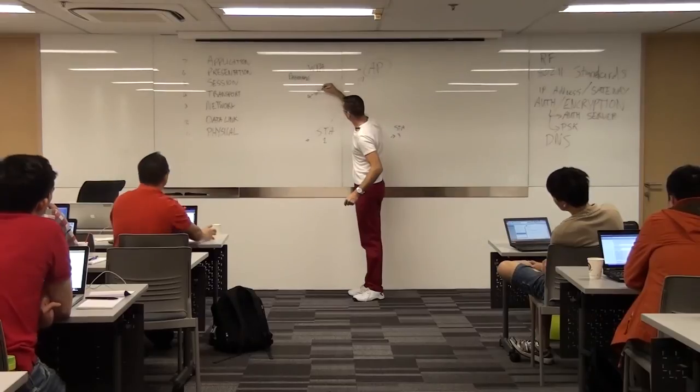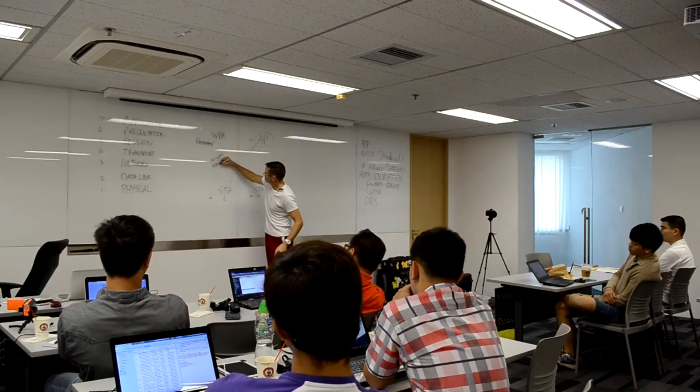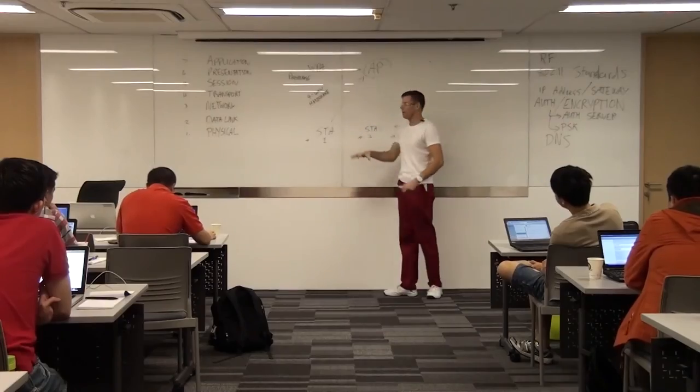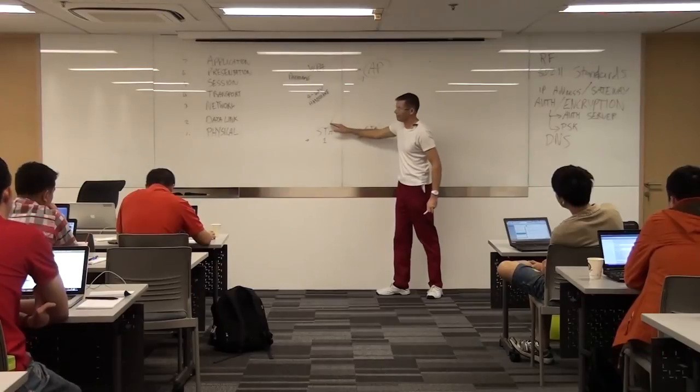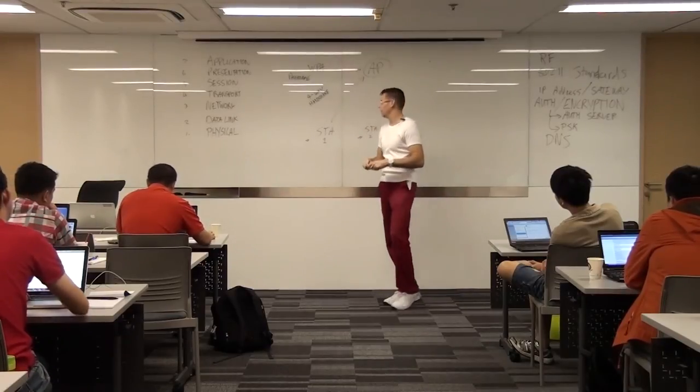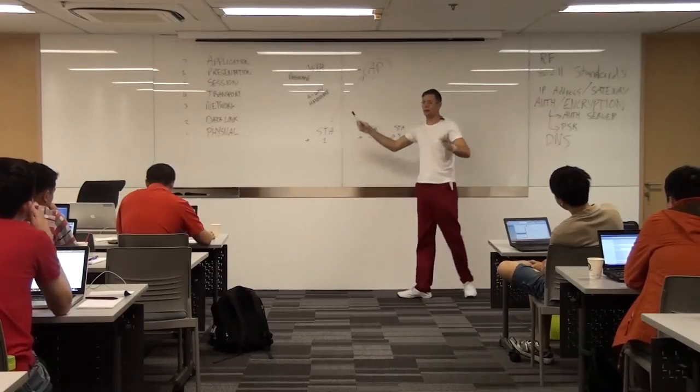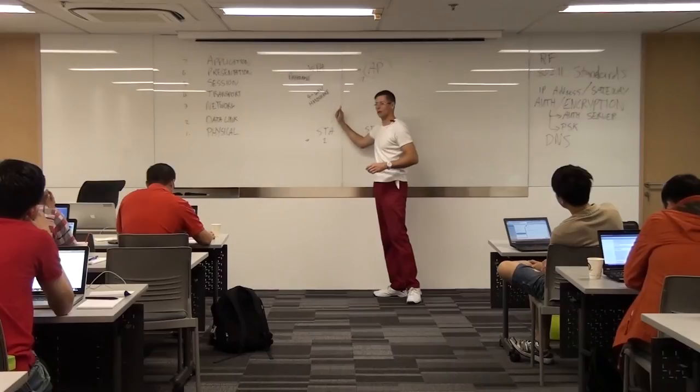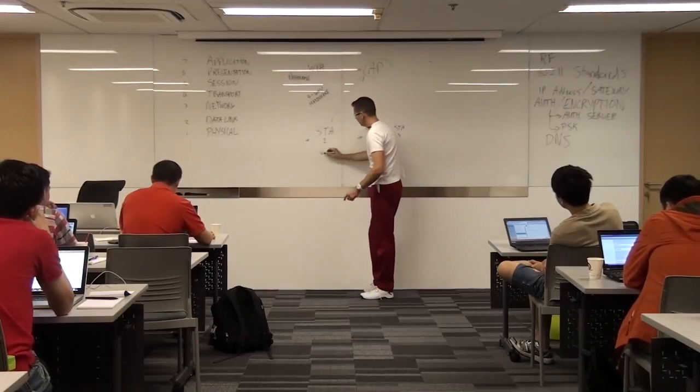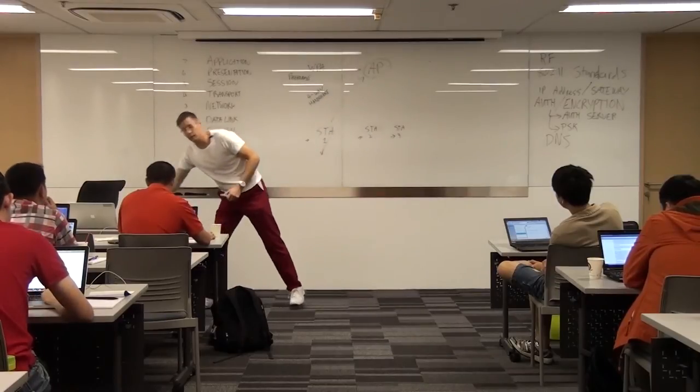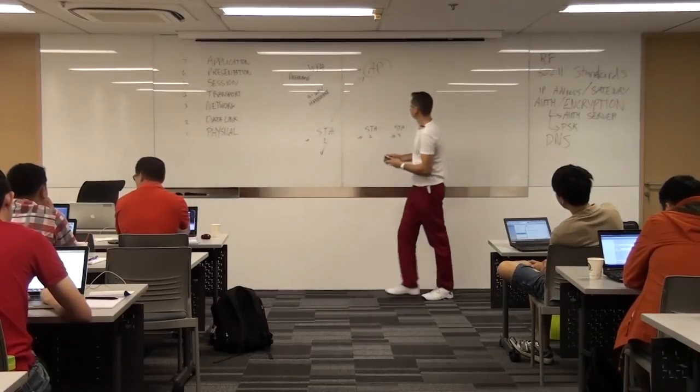We do that with what you might have heard of - the four-way handshake. A four-way handshake takes place between this AP and the station, and they negotiate the key right there, particular to them based on the MAC addresses and some random numbers. They create the traffic key.